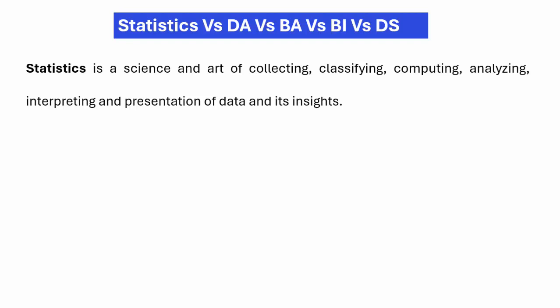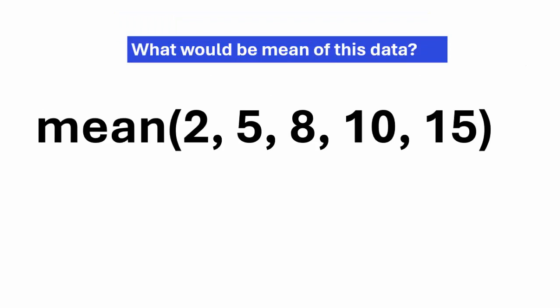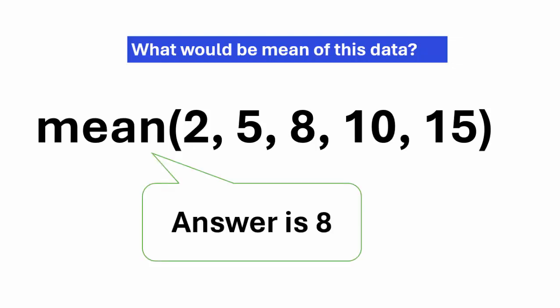Now we try to understand why statistics is a science. A small dataset is given and I want to know the mean. If you calculate the mean without any calculation mistake, we all will get mean 8, which is correct. We are all getting the same mean. It doesn't mean that someone more experienced gets a better mean. Here it is a science — there is a method by which we calculate this, so that is why statistics is a science.